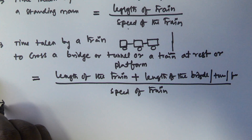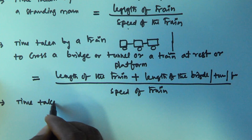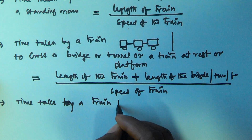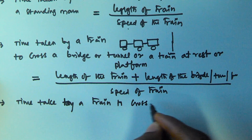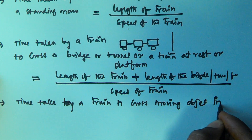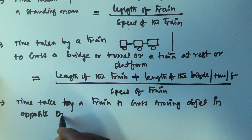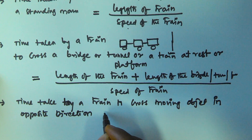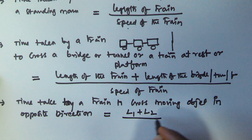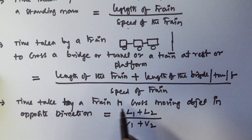The next point we have to remember: time taken by a train to cross a moving object in the opposite direction is given by L1 plus L2 divided by V1 plus V2.